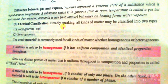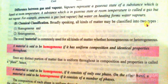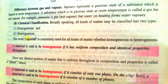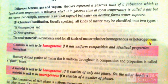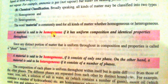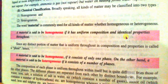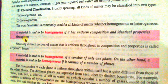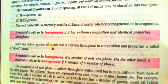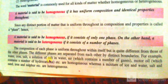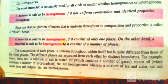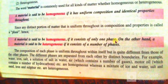Chemical classification. Broadly speaking, all kinds of matter may be classified into two types: homogeneous and heterogeneous. The word material is commonly used for all kinds of matter whether homogeneous or heterogeneous. A material is said to be homogeneous if it has uniform composition and identical properties throughout. Since any distinct portion of matter that is uniform throughout in composition and properties is called a phase, a material is said to be homogeneous if it consists of only one phase.